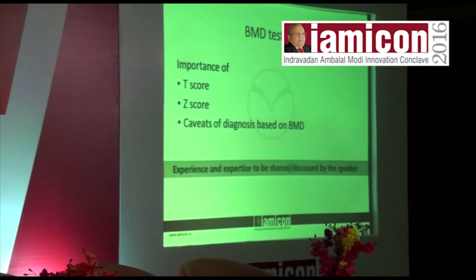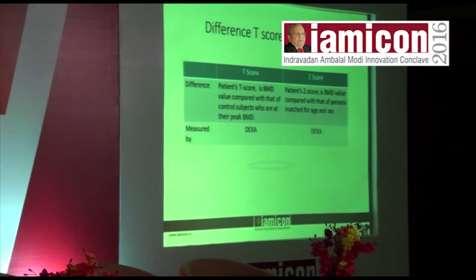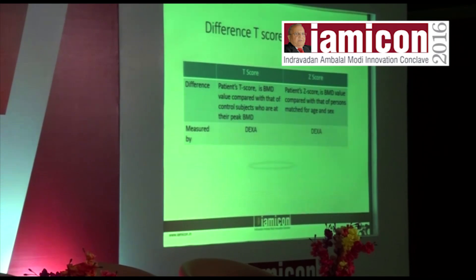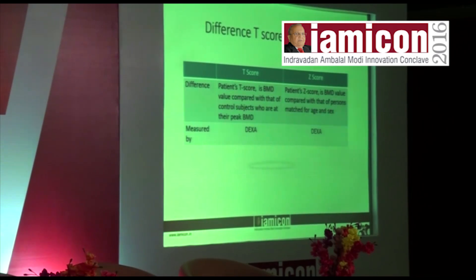BMD testing: the importance of T-score, Z-score and caveats of diagnosis based on BMD. The T-score is the patient's BMD value compared with that of control subjects who are at the peak of their bone mineral density. Normally we use T-score, not Z-score. The Z-score is the patient's BMD value compared with that of persons matched for age and sex.